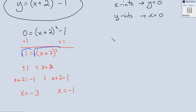Now let's do my y-intercepts. So in that case right here, I say y equals 0 plus 2 quantity squared minus 1. So y equals 2 squared minus 1. So y equals 3.